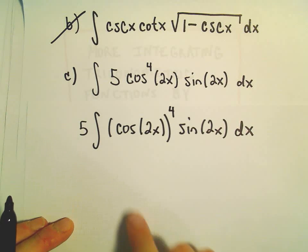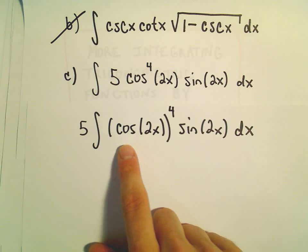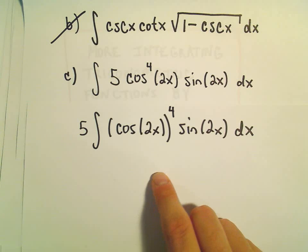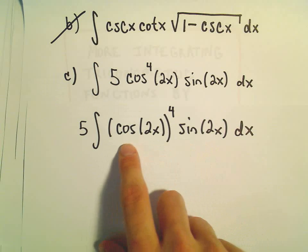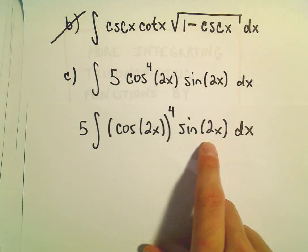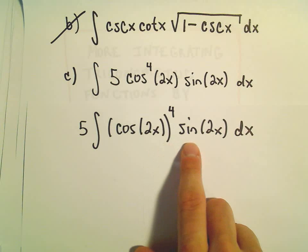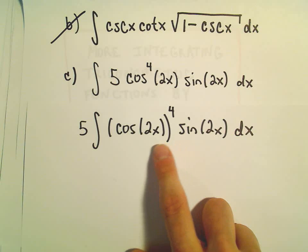So now I'm going to pick my u-substitution. I think there's a couple different choices here. You could let u be 2x, but then you would have cosine to the 4th times sine of something. And what do you do with that? You can actually use some identities in that case, I think, to break it down.